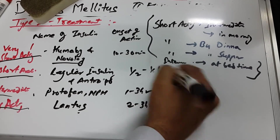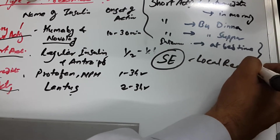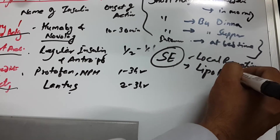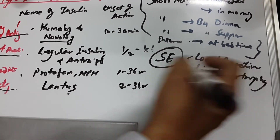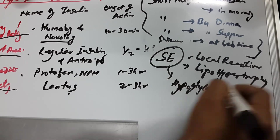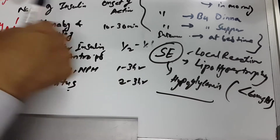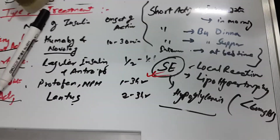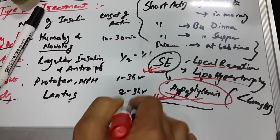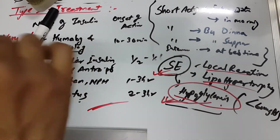There are some side effects of insulin injections to mention. There may be local reactions at the injection site, and lipohypertrophy. The most common side effect is hypoglycemia — the blood glucose level may fall below 60 mg per dL. We need to check the dosage carefully to avoid hypoglycemia in patients.